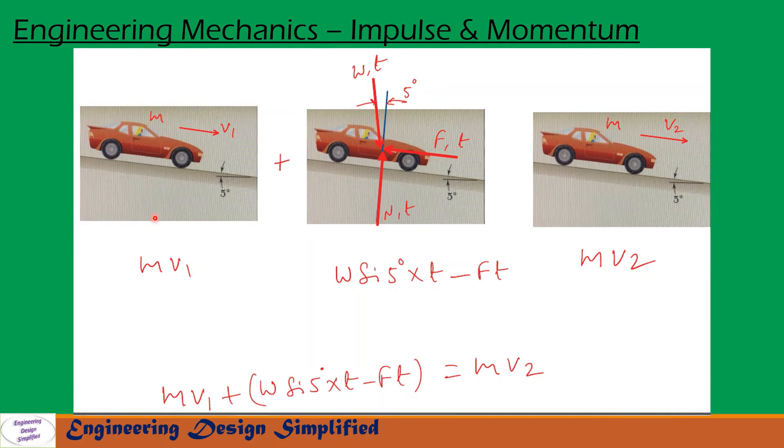Now let us see an example. Here a car of mass m or weight W is moving with a velocity v₁ along an inclined plane. The inclination is 5 degrees. So the initial momentum of the car can be written as m·v₁ along this plane.